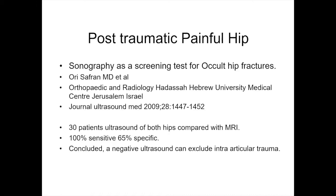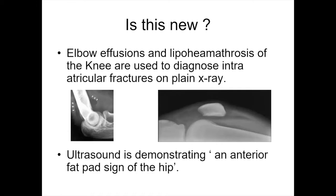Here's the evidence: a post-traumatic painful hip series from Israel, 30 patients, with ultrasound of both hips compared with MRI. It was 100% sensitive and concluded that a negative ultrasound can exclude intra-articular trauma. This is not entirely new — on the plain x-ray we look for effusions and lipohemarthrosis. There's an anterior fat pad sign on the left of the elbow; in the presence of trauma, that's a fracture until proven otherwise. And the lipohemarthrosis on the horizontal beam lateral — the fat-fluid level — even if the x-ray was normal, you'd suspect a fracture. With ultrasound, we're essentially demonstrating an anterior fat pad sign of the hip.